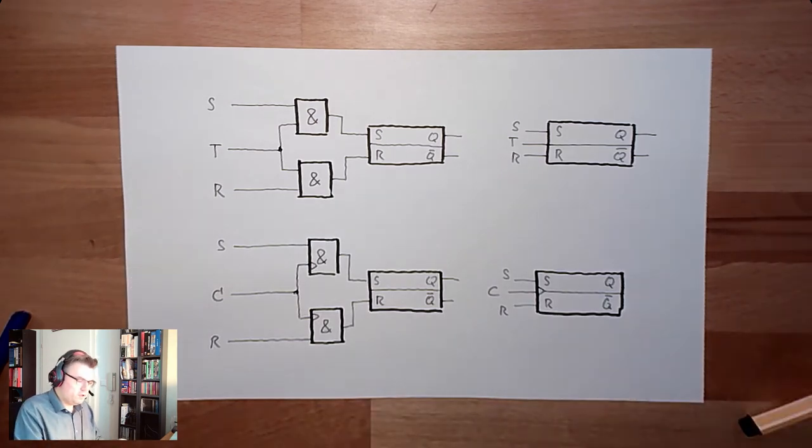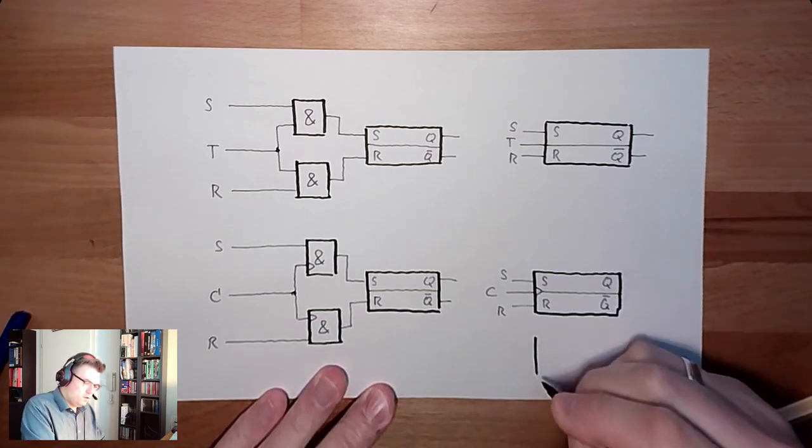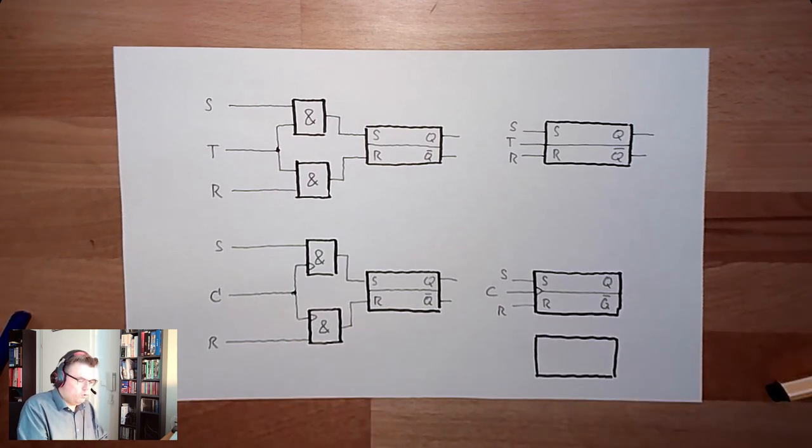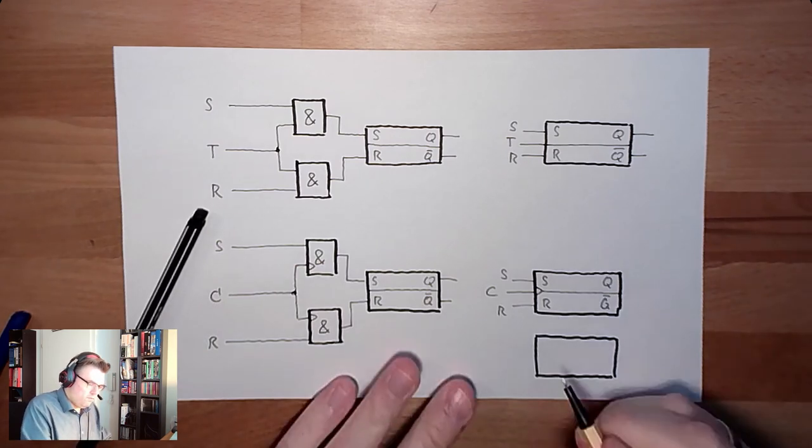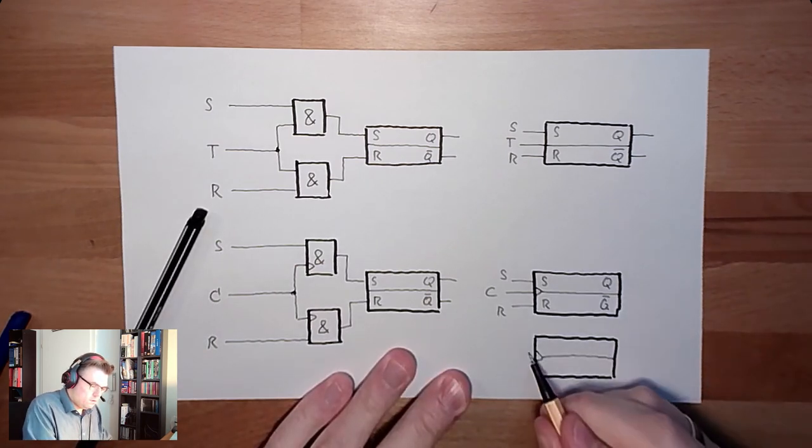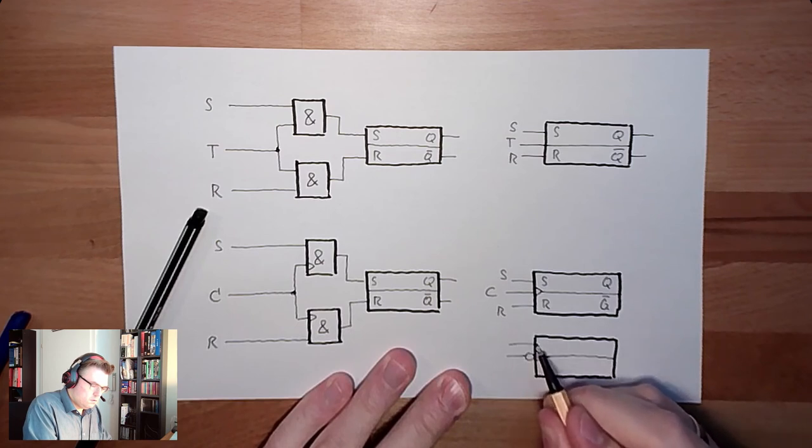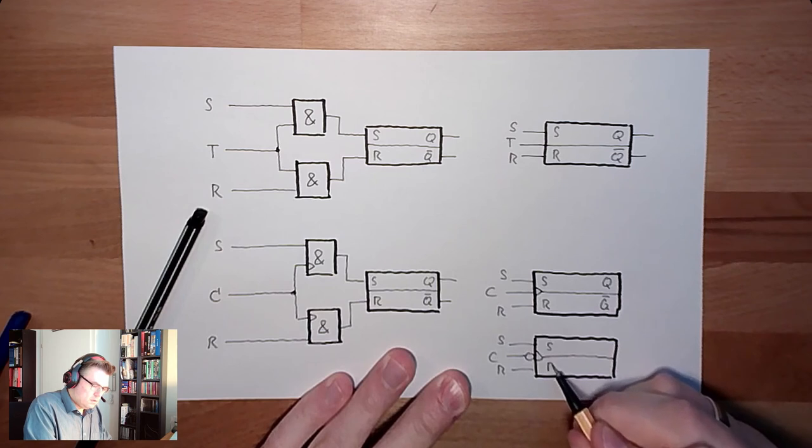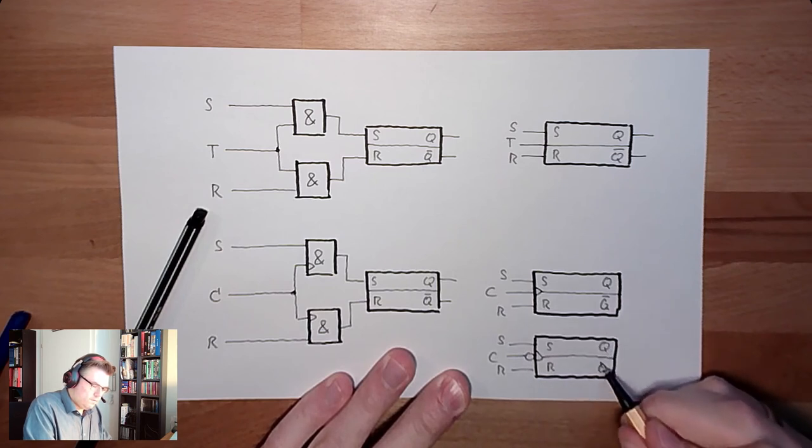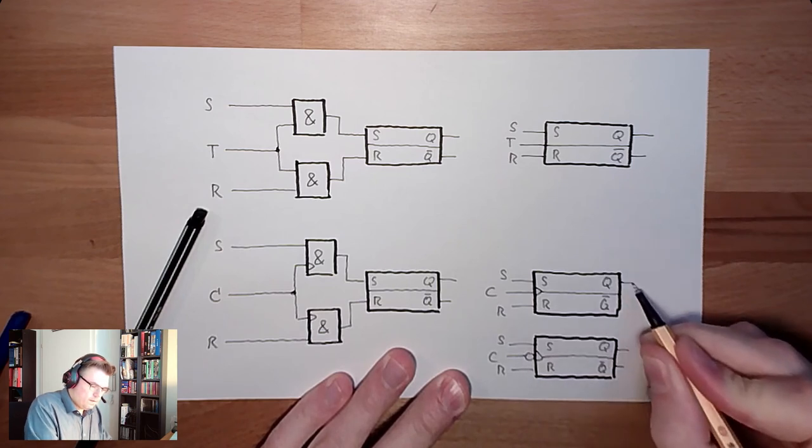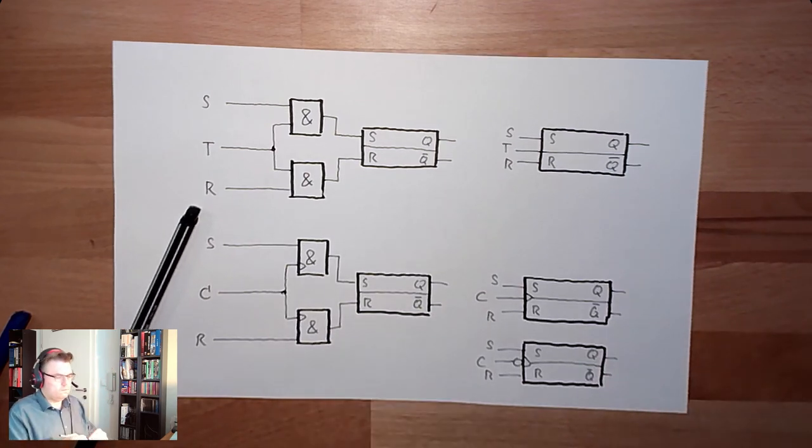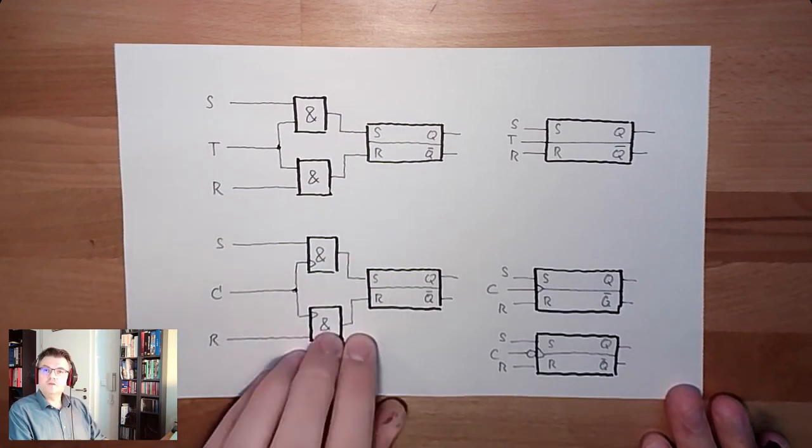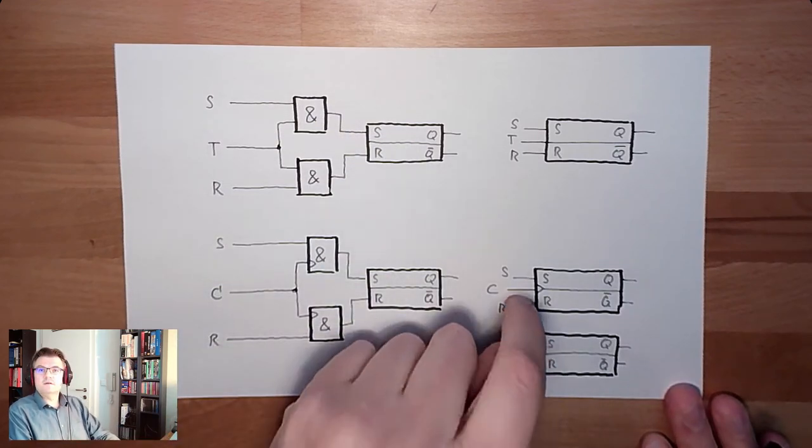On falling edge there is also, of course. Then we just again write like it would be inverted. So S, R, C, S, R, Q. Level triggered latches, edge triggered latches, rising, falling edge.